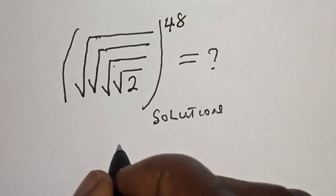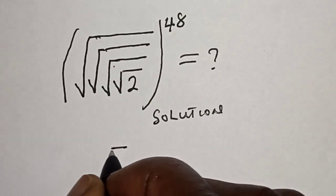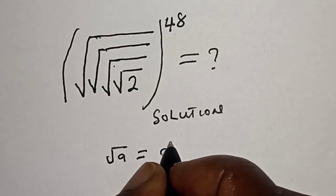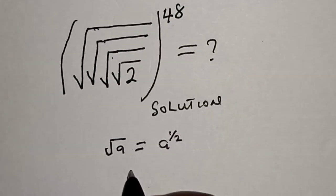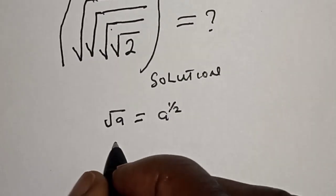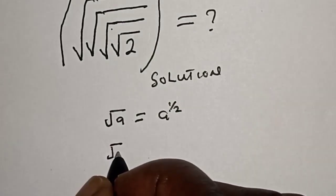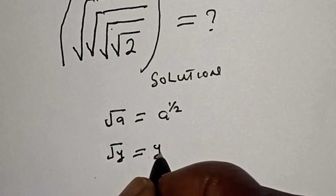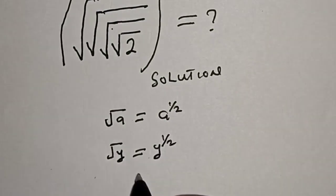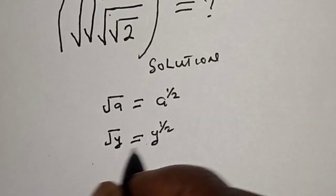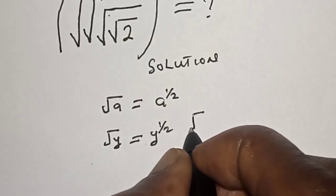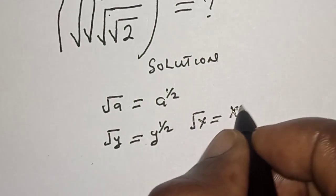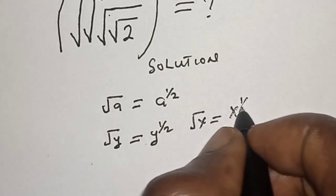Now remember this: if you have root a, this is equal to a raised to power 1 over 2. Also, if you have root y, this is equal to y raised to power 1 over 2. And if you have root x, this is equal to x raised to power 1 over 2.